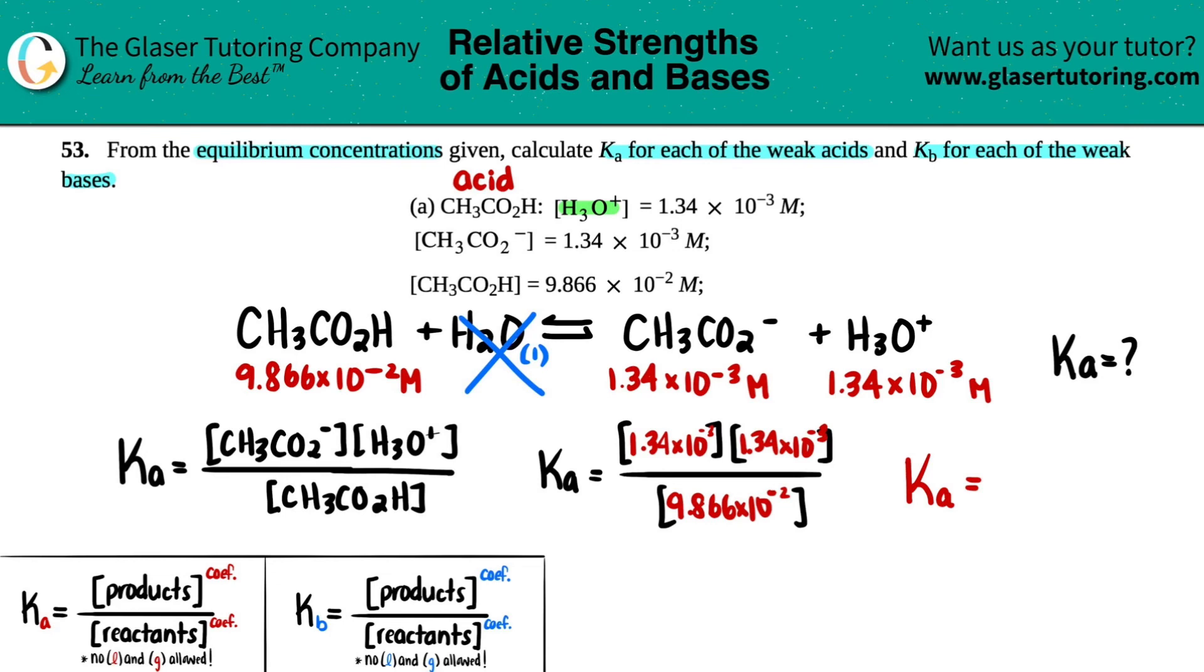And for sig figs, I have 3 as my lowest. So I'll say 1.82 times 10 to the negative 5th.